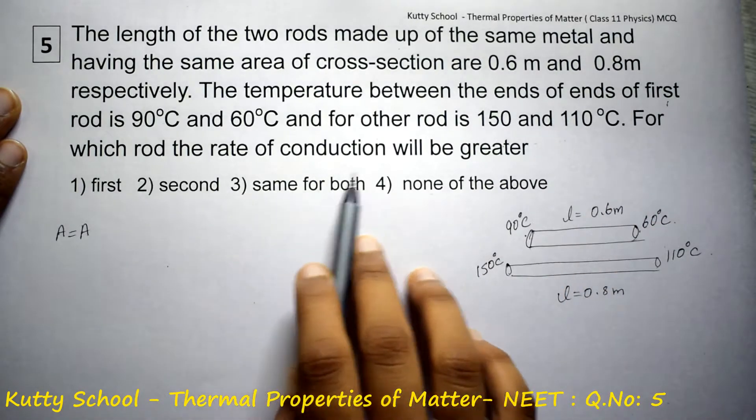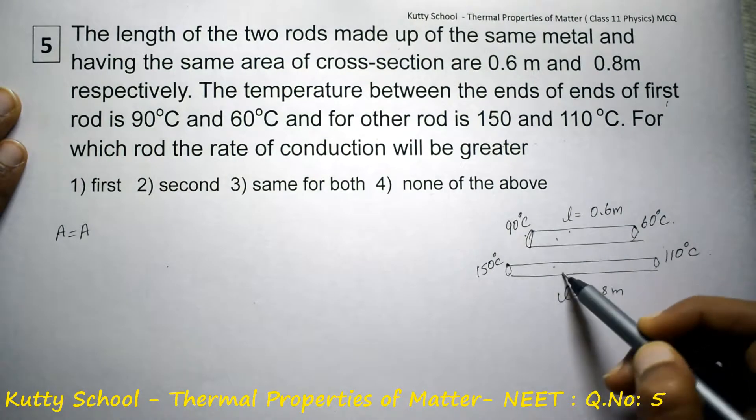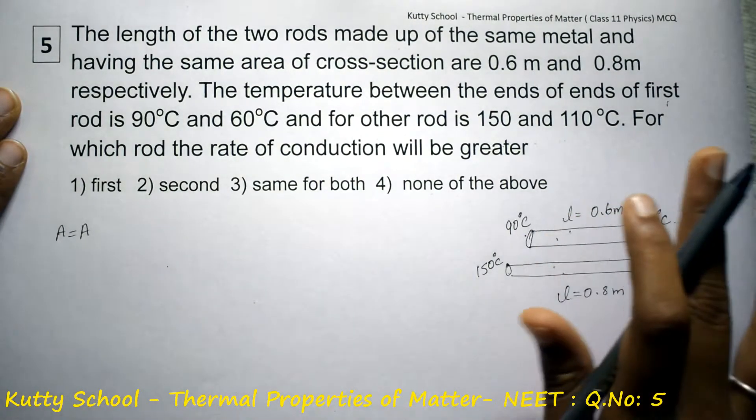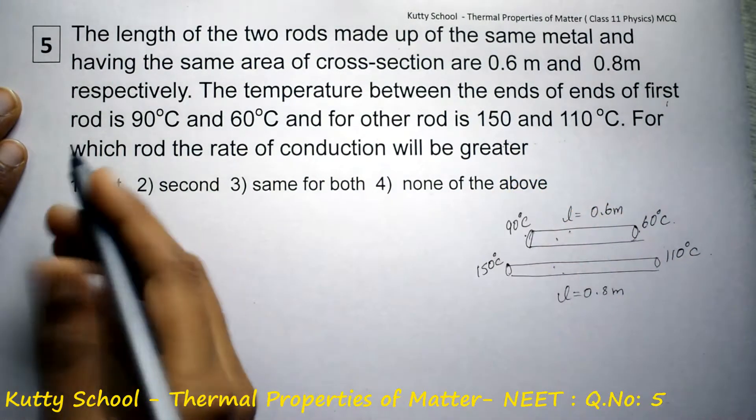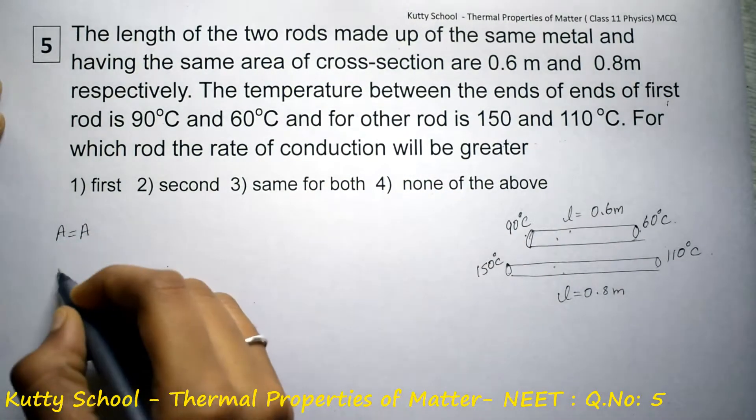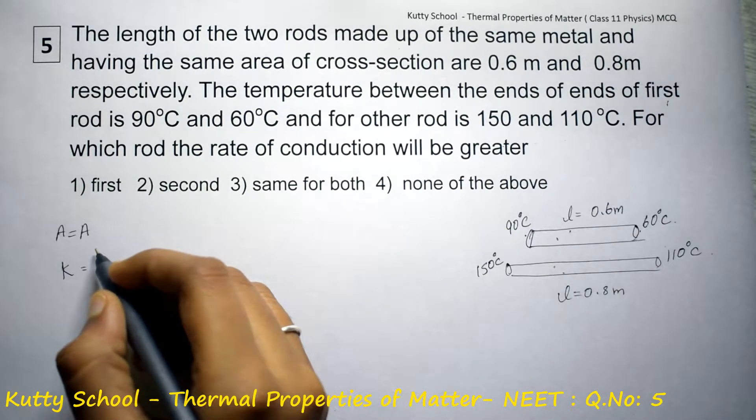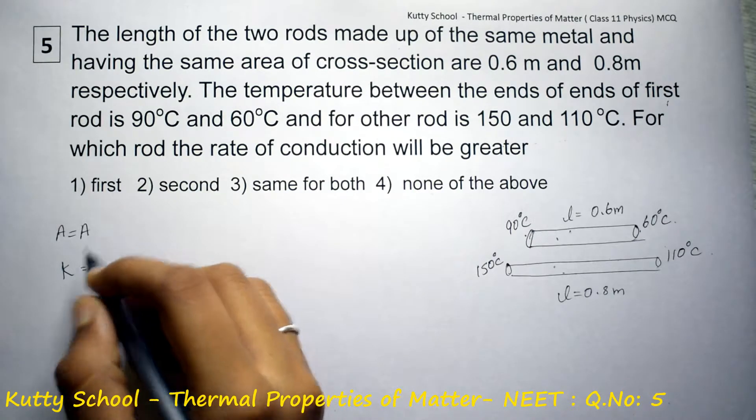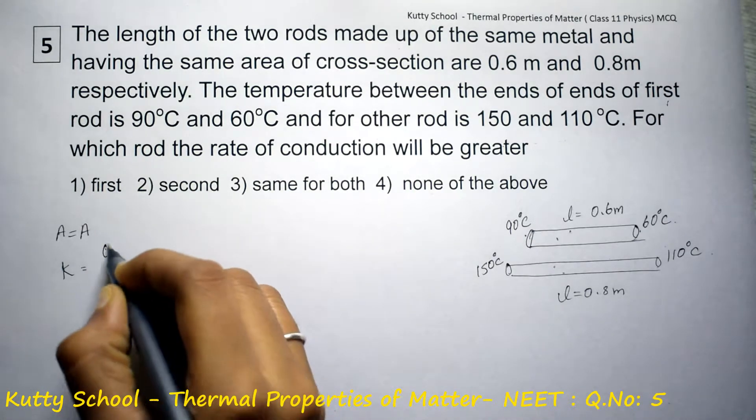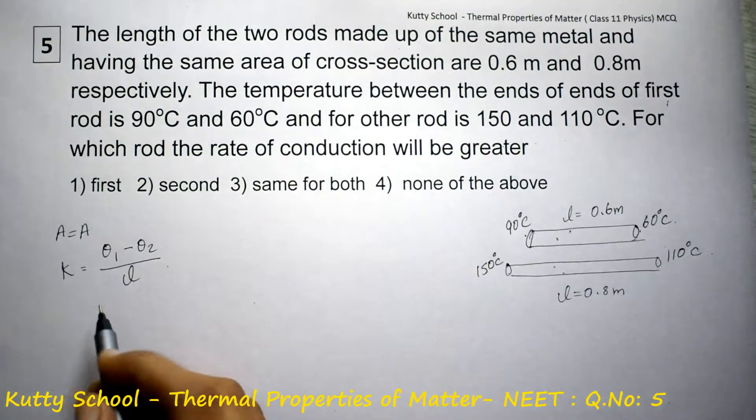For which rod the rate of conduction will be greater? The rate of conduction is equal to k, which equals theta 1 minus theta 2 by L.